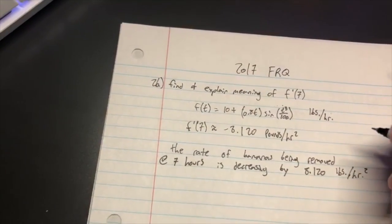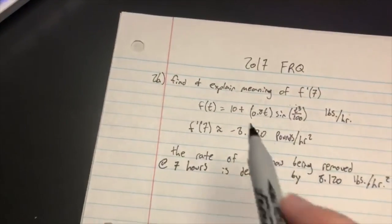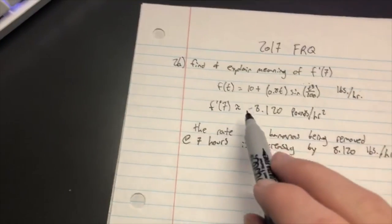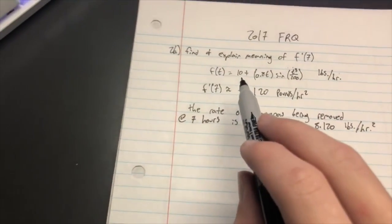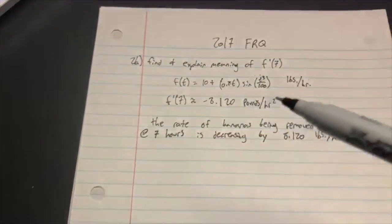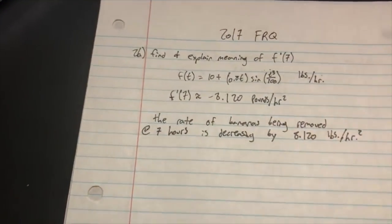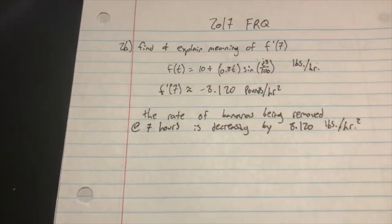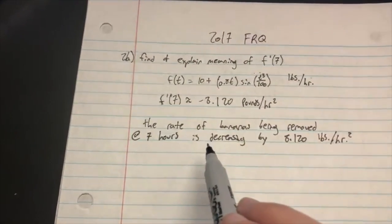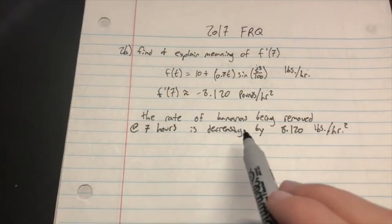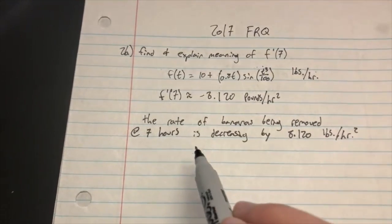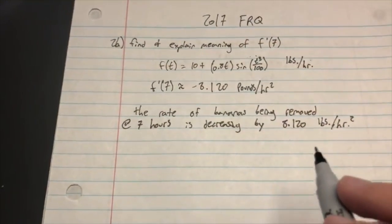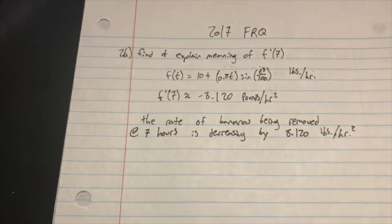If we just plug in f of 7, that gives us the rate at which bananas are being removed at 7 hours after opening. But our derivative here is saying that the rate of bananas being removed is decreasing at 7 hours by 8.12 pounds per hour squared.